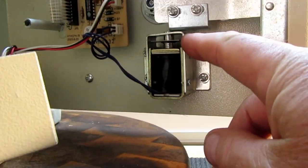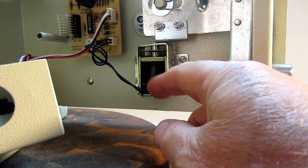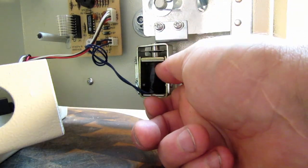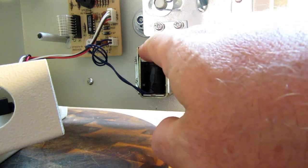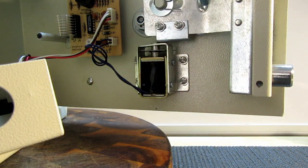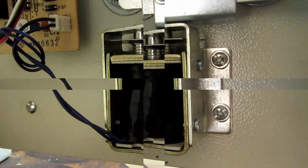So how this works is electricity comes from the battery down here, activates the coil, and pulls a plunger down that keeps this locking mechanism locked. I'll just show you that by pressing the buttons on the other side of the door.